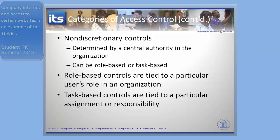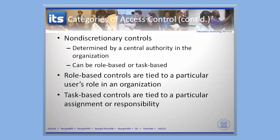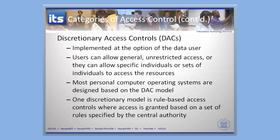Now let's move into discretionary access control. The important part is that most personal computer operating systems use this. There's an administrator who can, on a discretionary basis, apply access controls to certain objects and run them at different permission levels. Discretionary access control is rule-based — remember when we talked about access control lists? This is an example of that, where access control lists are built against particular objects and then used.